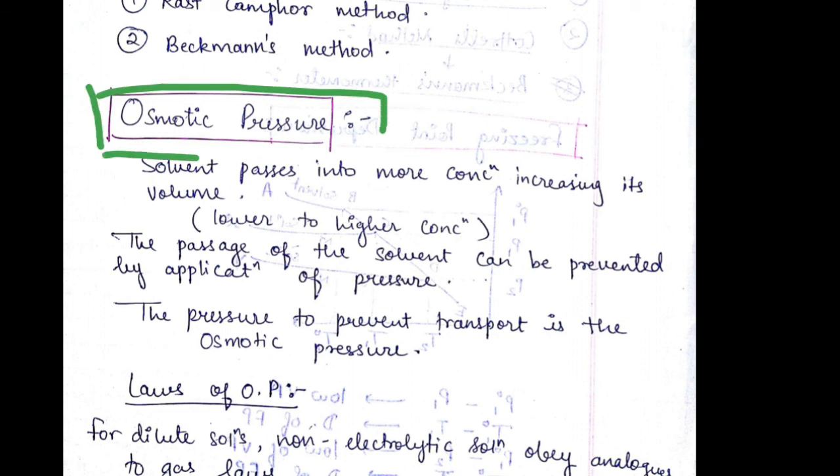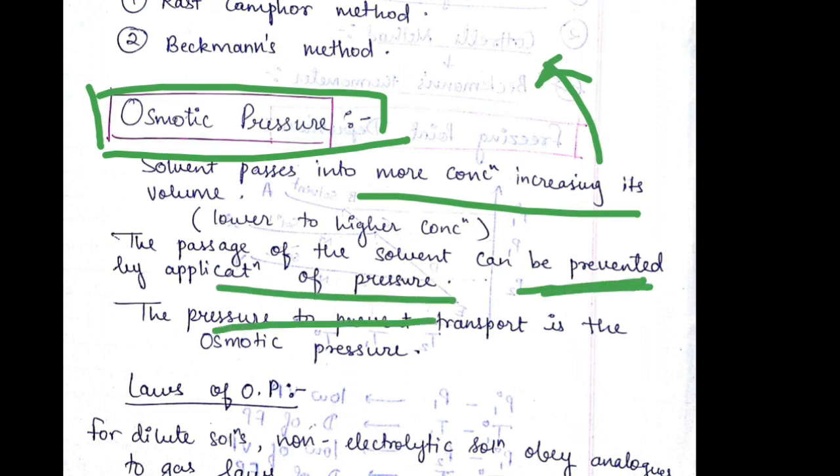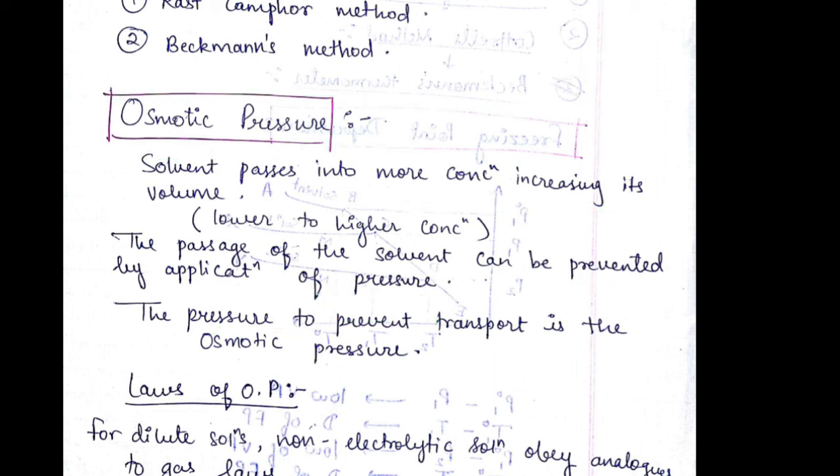Osmotic pressure. The solvent passes into more concentration increasing its volume, that is lower to higher. The passage of the solvent can be prevented by the application of pressure. This pressure which prevents the transport is called as osmotic pressure.